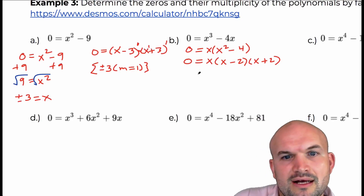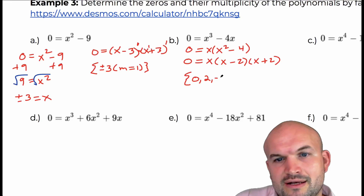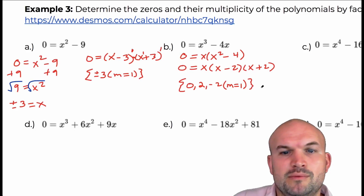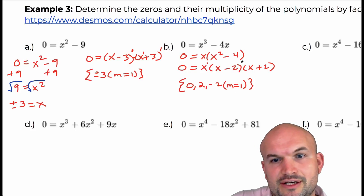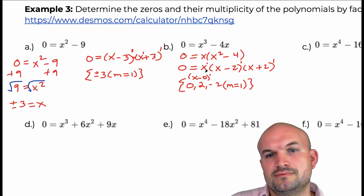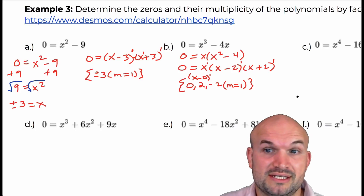So the solution set is zero, two, and negative two. Since they all have a multiplicity of one, I'll write multiplicity of one. You could write x as (x minus 0) to the first — all of these linear factors have a multiplicity of one.